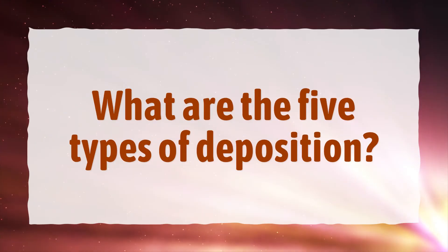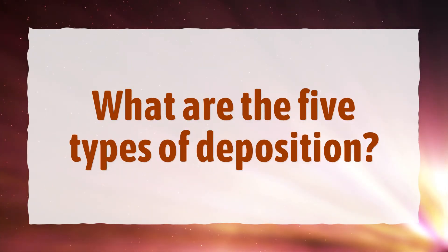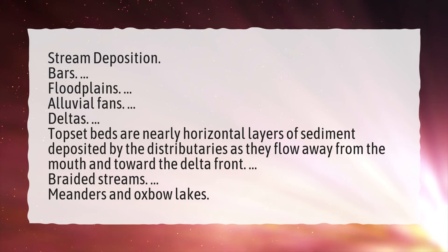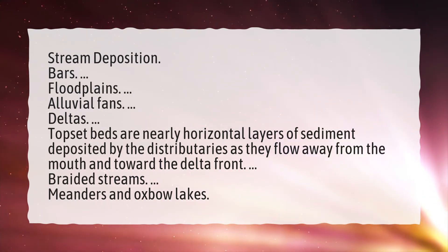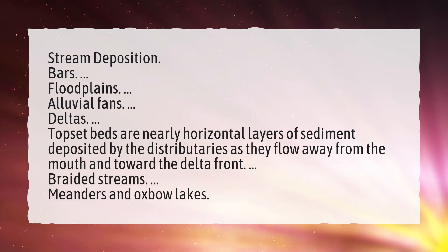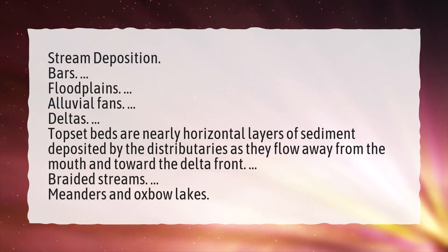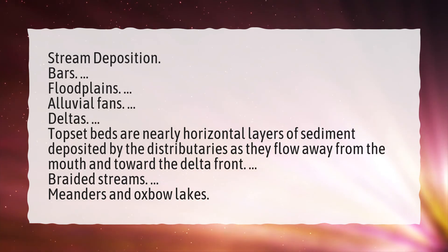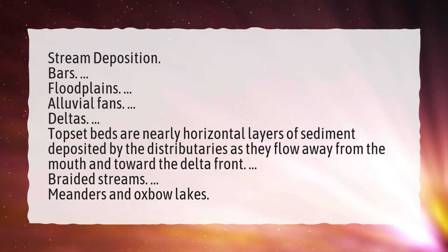What are the five types of deposition? Stream deposition: bars, floodplains, alluvial fans, deltas. Topset beds are nearly horizontal layers of sediment deposited by the distributaries as they flow away from the mouth and toward the delta front. Braided streams. Meanders and oxbow lakes.